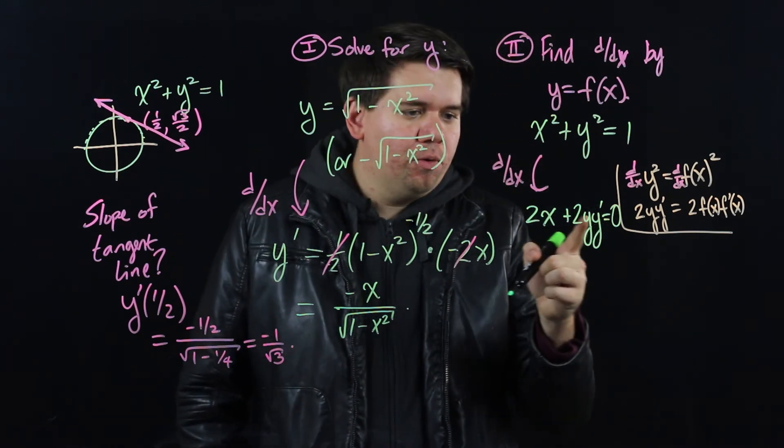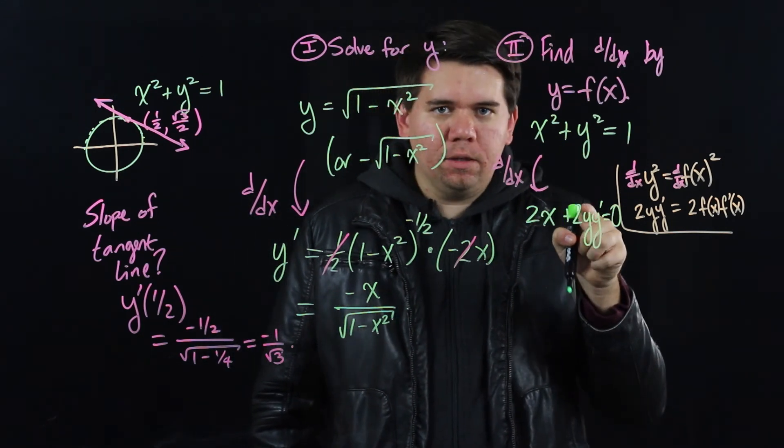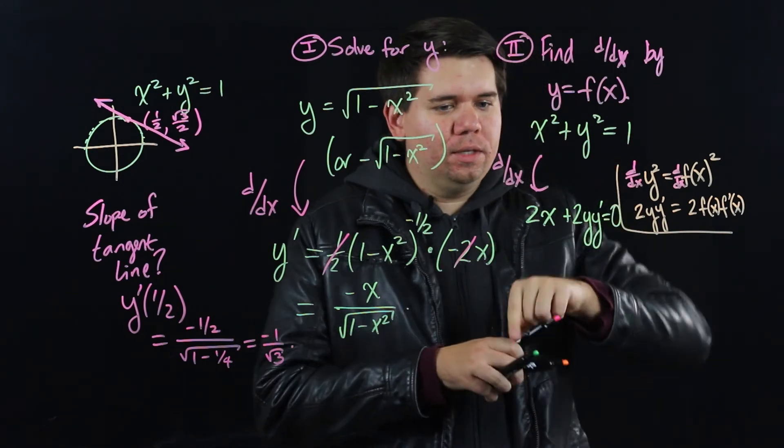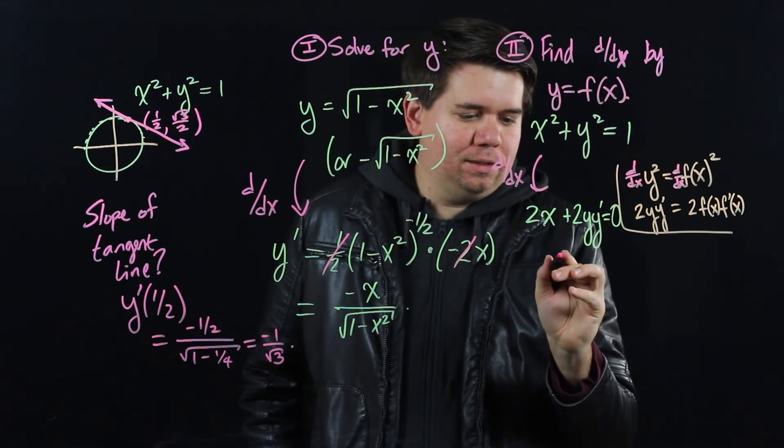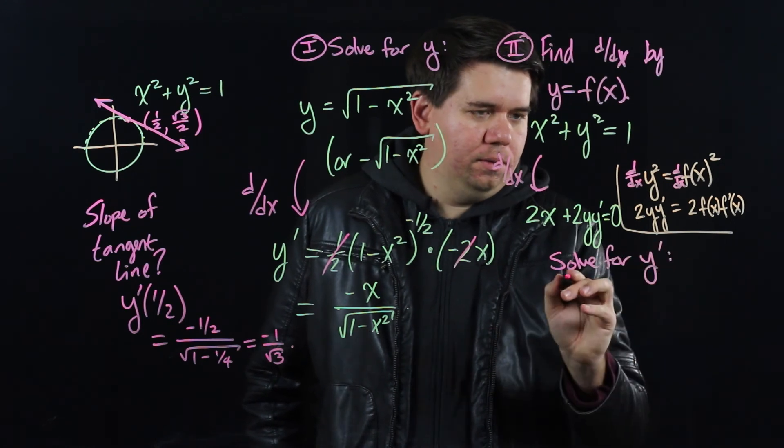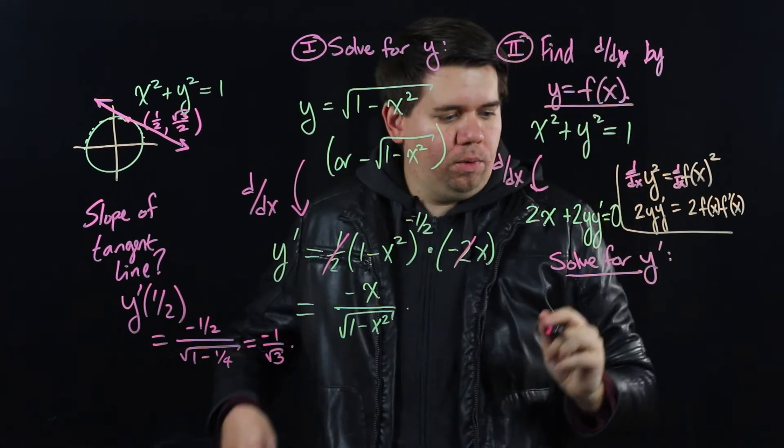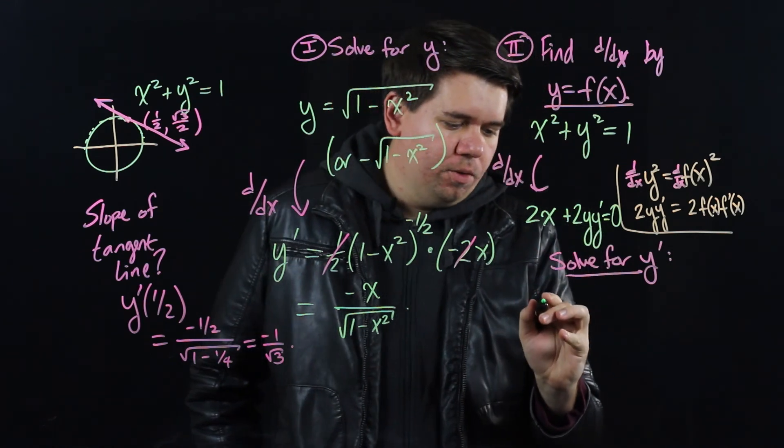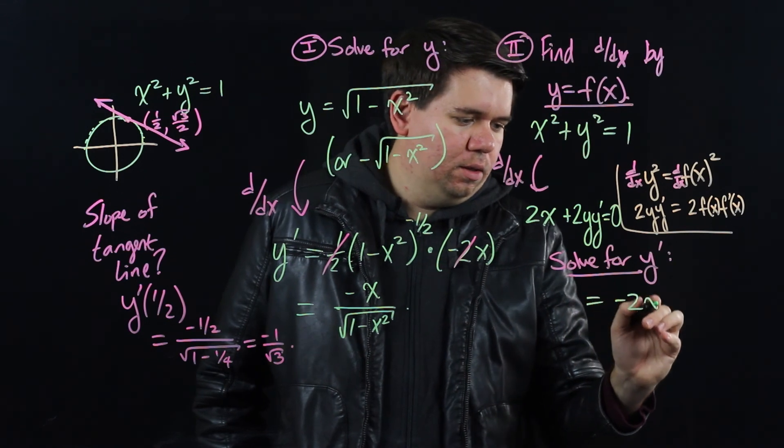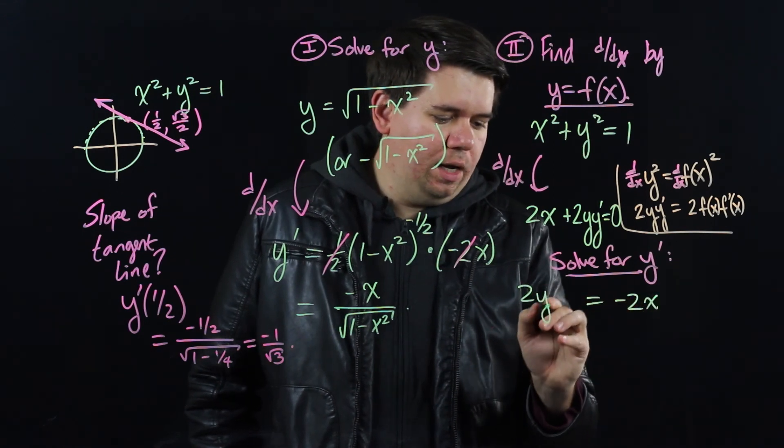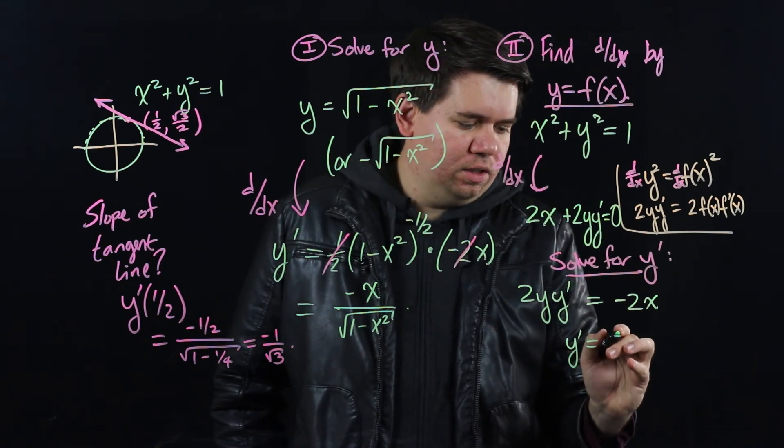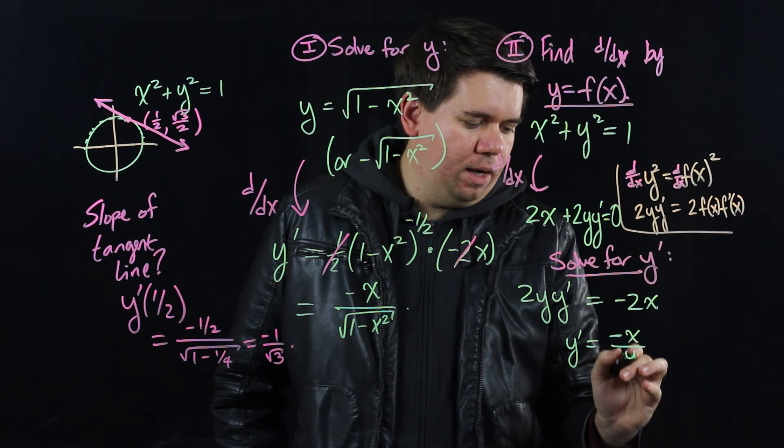Notice what we have now. We have an expression that has a y prime in it mixed in with some other stuff. So now what we're going to do, we need to isolate that y prime. So instead of solving for y, here our second step is we're going to solve for y prime. So let's see what we get. Solving for y prime, we get moving the minus 2x to the other side as minus 2x, we get 2y y prime is minus 2x, which means that y prime is just minus x divided by y.